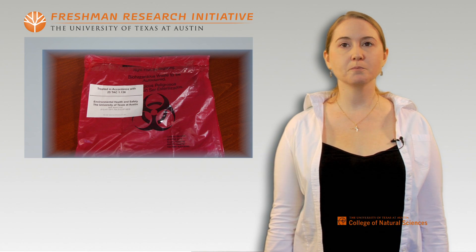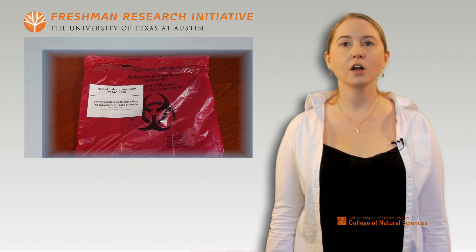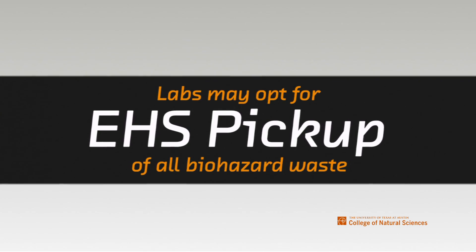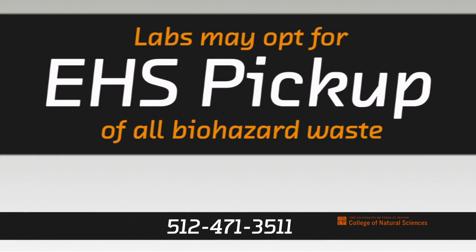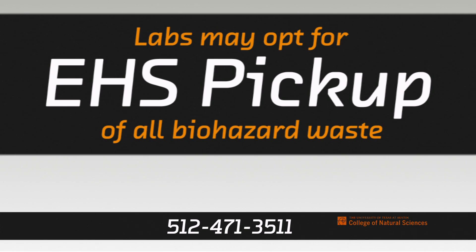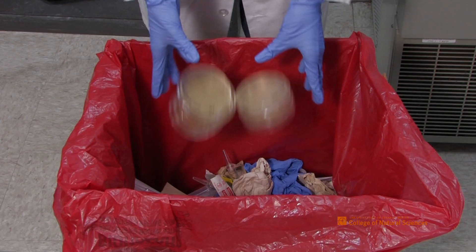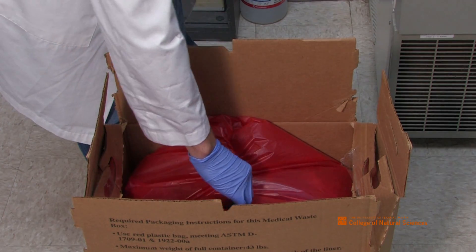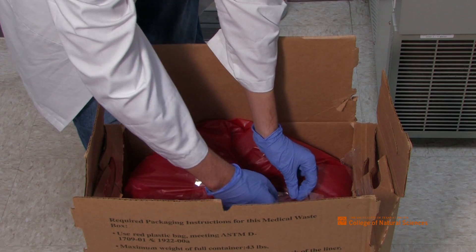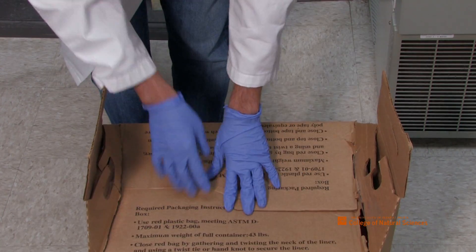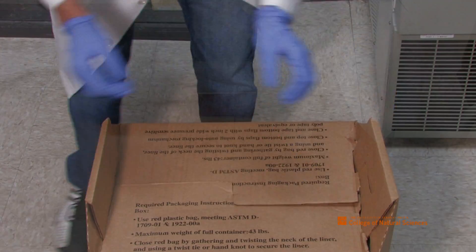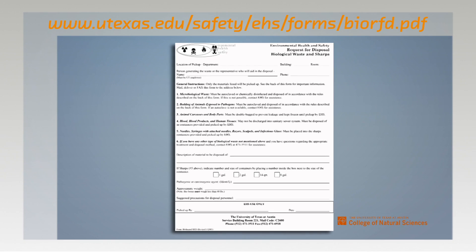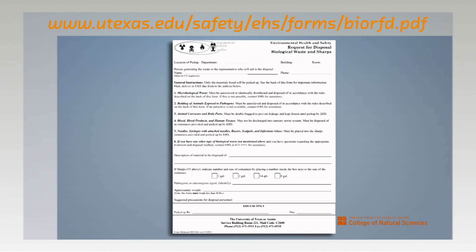The autoclaved biohazard bag must be tied and placed in the regular trash for custodial services to pick up. The lab generating the waste is not required to treat biohazardous waste; instead, the lab may opt for EHS to pick up and treat this type of waste. Biohazard waste bags must be securely closed by tying or taping shut and then placed into a biohazard box. Fax or mail the request for disposal form to EHS to initiate a pickup and request more biohazard waste containers. Note that the biohazard material cannot weigh more than 40 pounds. The form for sharps and biohazard waste can be downloaded from the EHS website.